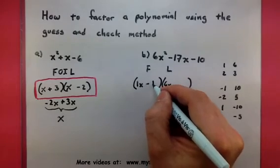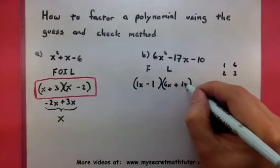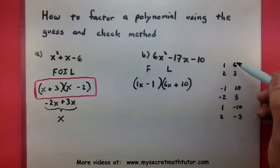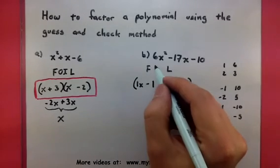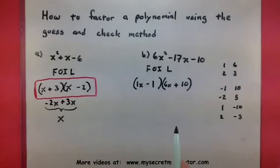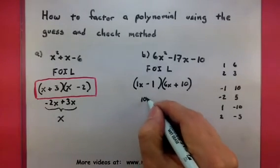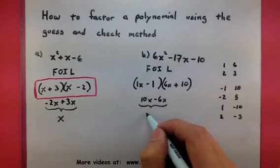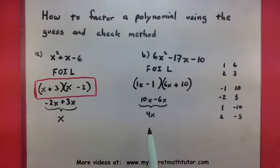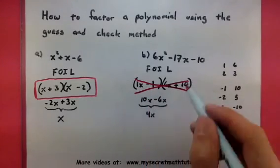So, what we're going to do is basically start checking some of these options. So, I'm using my first pair, the 1 and 6, with my first option for the last terms, the negative 1 and 10. Now, I'm going to check my outside and inside terms to see if this really works out. So, my outside would give me a 10x. My inside would give me a negative 6x. When those combine, I get a 4x. And you'll notice that is not the same as what my middle term really needs to be. What does that tell me? It means that these two pieces that I want to break my polynomial down into, they're not the right ones.